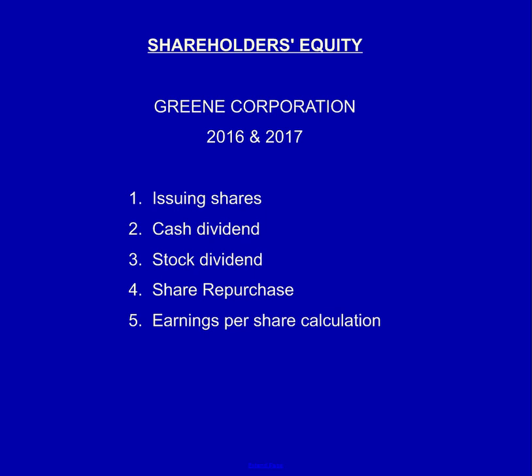We're going to be doing a number of things: issuing shares, recording a cash dividend, then a stock dividend which is quite different, share repurchase which a lot of students have problems with, and then earnings per share. Note that I will be doing earnings per share in 2017, not in 2016, because when you do a stock dividend you have to do some additional calculations and I don't want to get into anything that complex for introductory financial accounting.